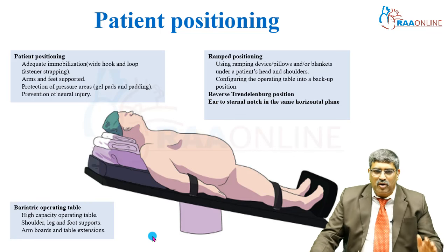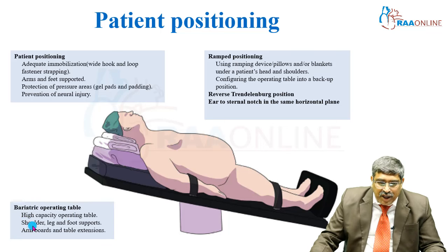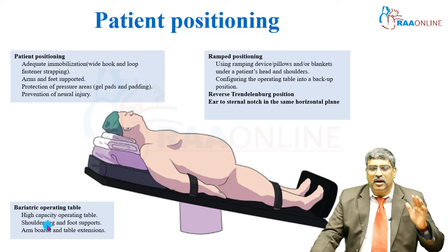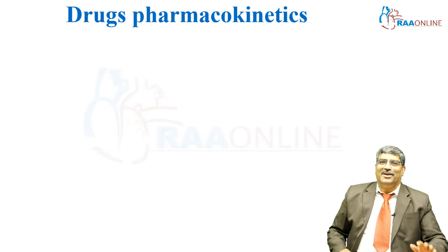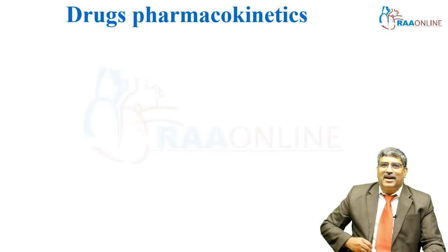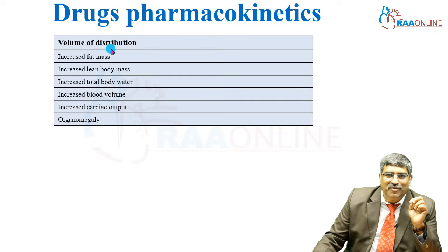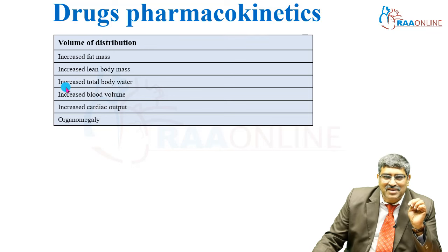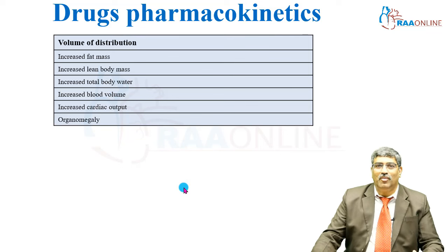With regard to the operating table, it should be a high-capacity table with adequate shoulder, leg, and foot support, with arm board and table extensions to accommodate the extra weight. Coming to drug pharmacokinetics — the volume of distribution is high because of increased fat mass, increased lean body mass, increased total body water, increased blood volume, high cardiac output, and organomegaly.